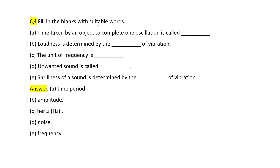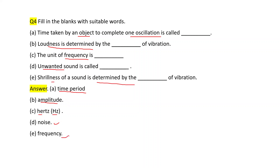Fill in the blanks. Time taken by an object to complete one oscillation is called — this is the definition of time period, answer: time period. Loudness is determined by the amplitude of vibration. The unit of frequency is hertz (Hz). Unwanted sound is called noise. Shrillness of a sound is determined by the frequency of vibration.